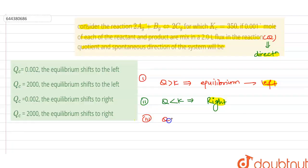And the last case when Q is equal to K, then in this case the equilibrium will be maintained where the rate of forward reaction becomes equal to the rate of backward reaction.